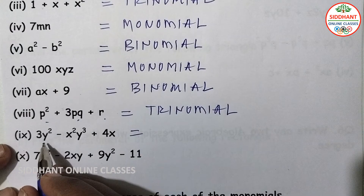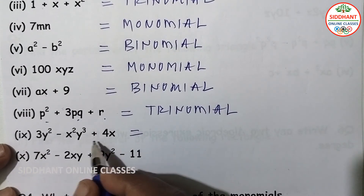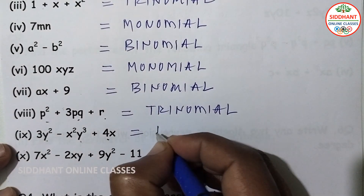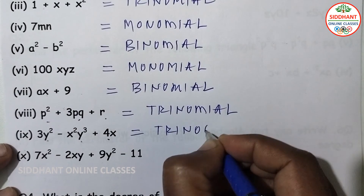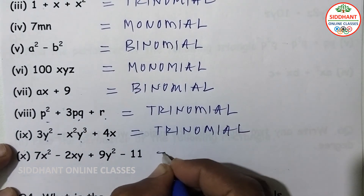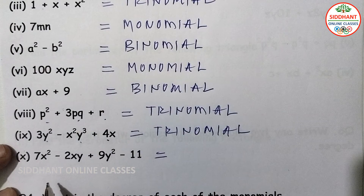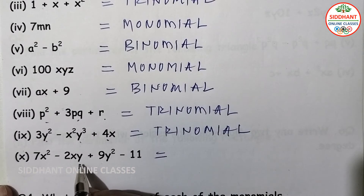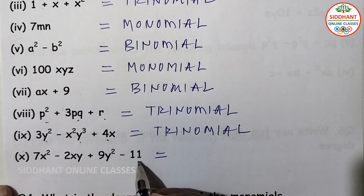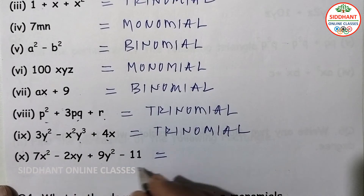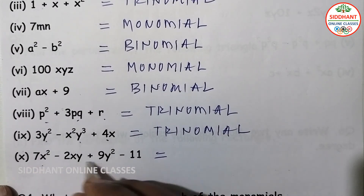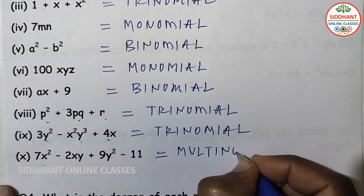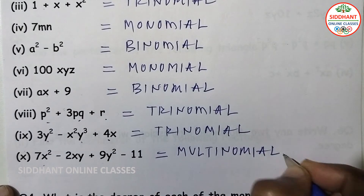Ninth — 3y square minus x square minus x square y cube plus 4x — three terms, trinomial. Tenth — 7x square minus 2xy plus 9y square minus 11 — four terms, which is more than three, so we say it is a multinomial.